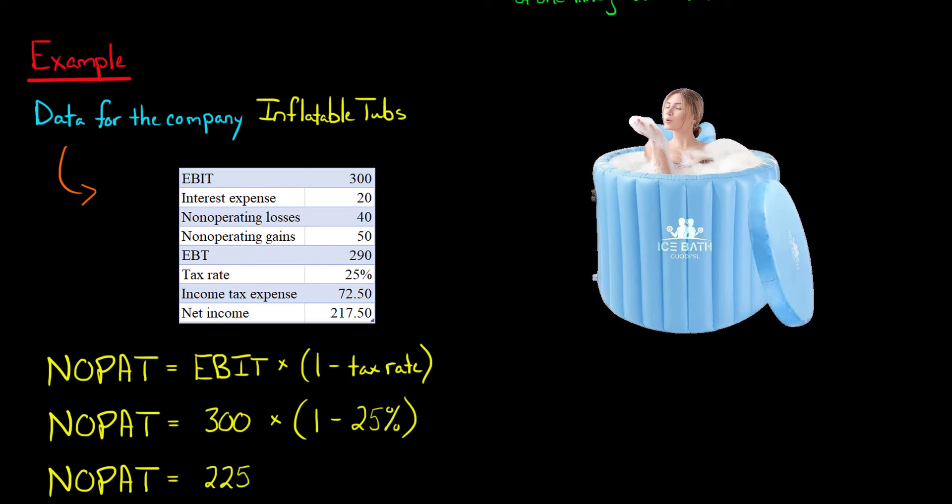Let's start with the easier one. We take the company's earnings before interest and taxes, you can see that it's $300, and then just multiply by one minus the tax rate, which the tax rate is given as 25%, and you get to a NOPAT of $225.